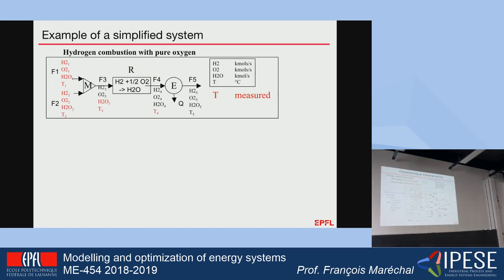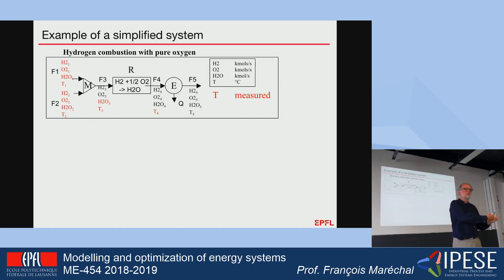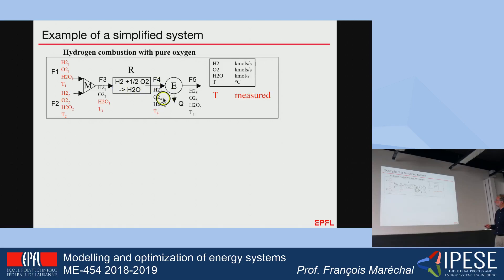I am going to show you a method that allows verifying that we have enough measurements, that nothing is missing, and what to do if we have too many. I will use a simple example: hydrogen and oxygen fed into a reactor where part of the hydrogen is burned, producing water, followed by a heat exchange. All the red elements are measured — meaning I have sensors giving me the temperature and flows of the different compounds at the inlet, the temperature here and here.